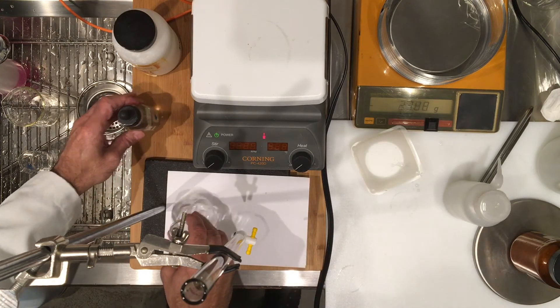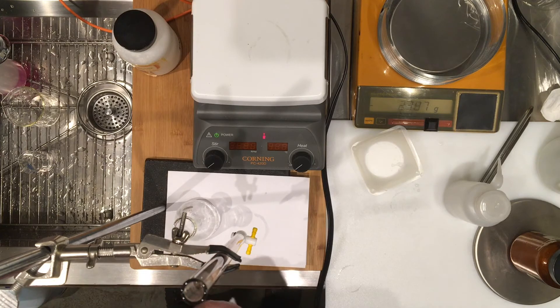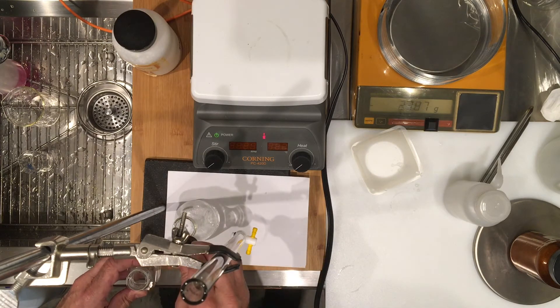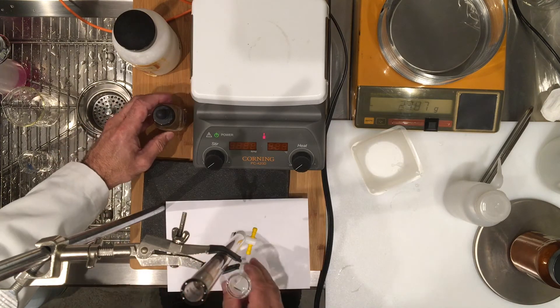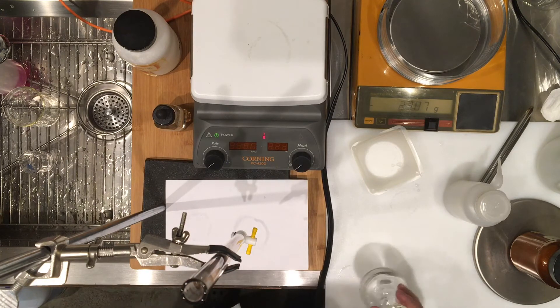I've already set my burette to zero milliliters with sodium hydroxide, and I'll add a few drops of the indicator. This time, if you notice, the mass is higher.